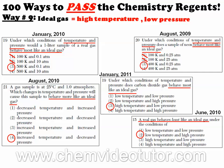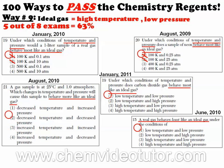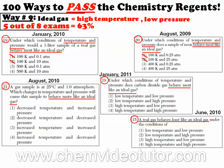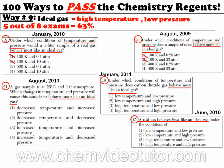Aside from this question appearing on 5 out of 8 recent chemistry regents exams, take a look at how similar the question numbers are. Remember that an ideal gas operates best at high temperature and low pressure.